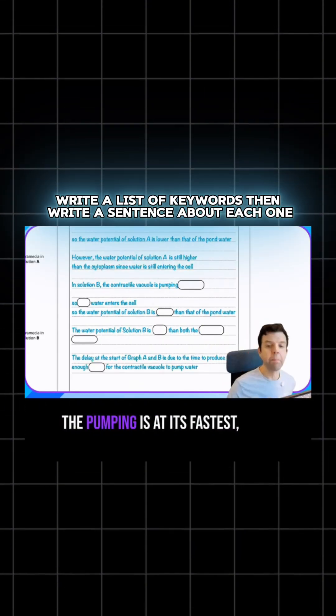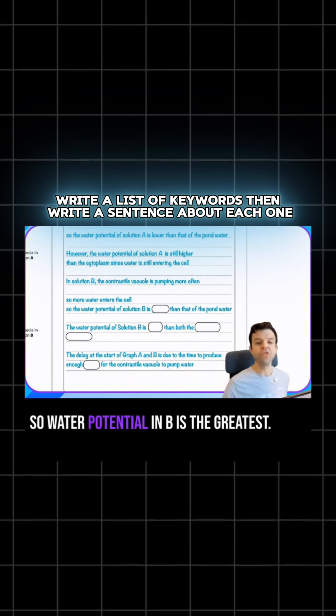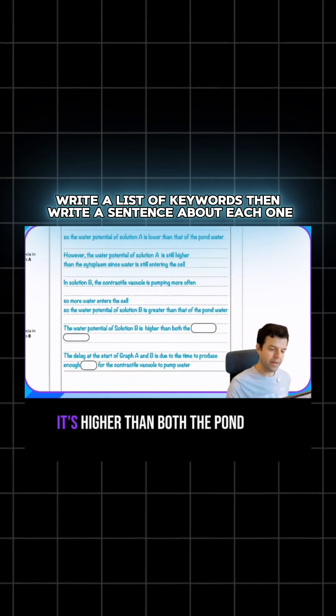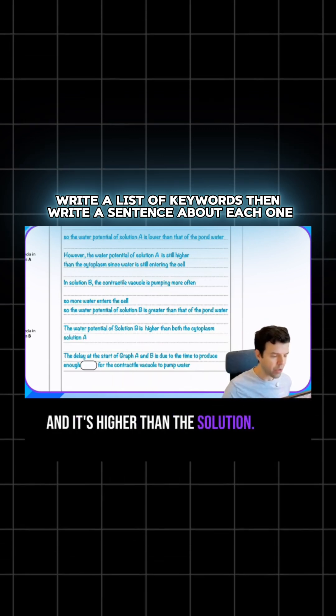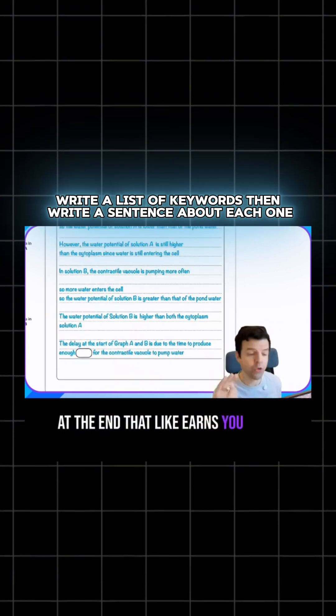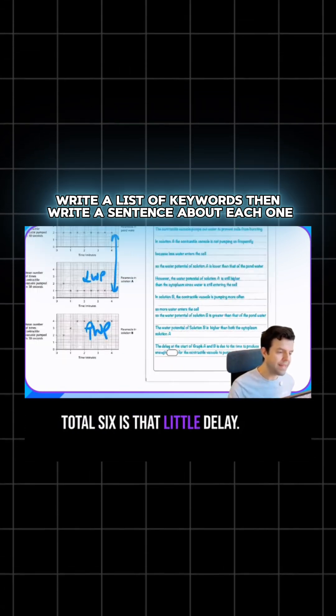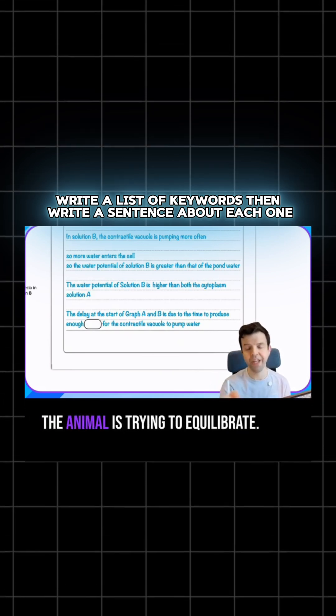How about my last solution? The pumping is at its fastest, so water enters. Water potential in B is the greatest. It's higher than both the pond water and solution A. Now there's a little mark here at the end that earns you total six marks. What is that little delay?